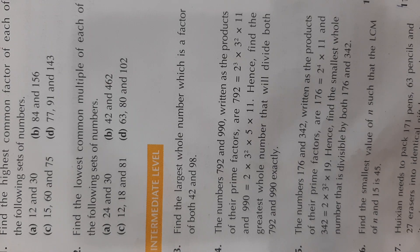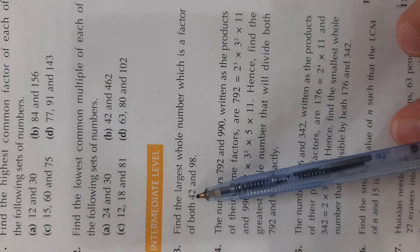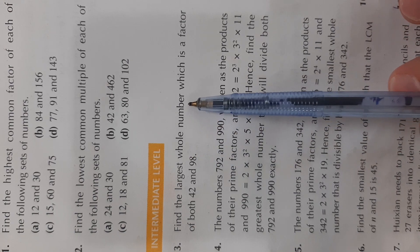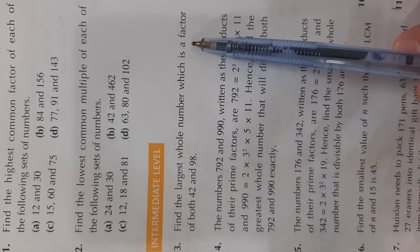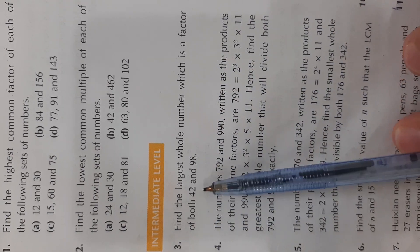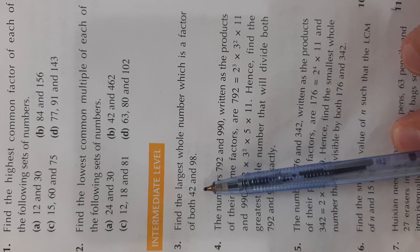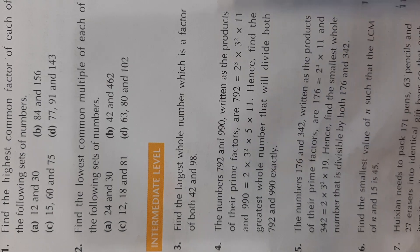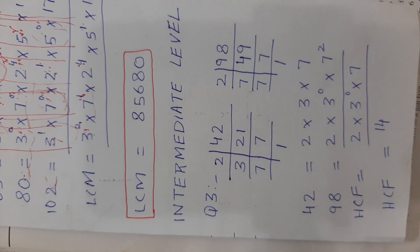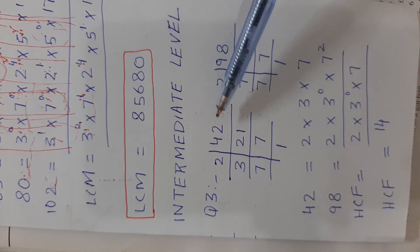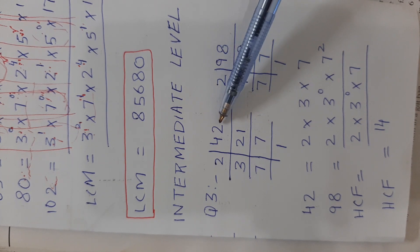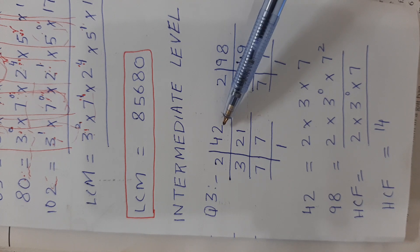In this video we will be solving intermediate level questions from exercise 1B, starting from question number 3: find the largest whole number which is a factor of both 42 and 98. For this we need to do prime factorization.